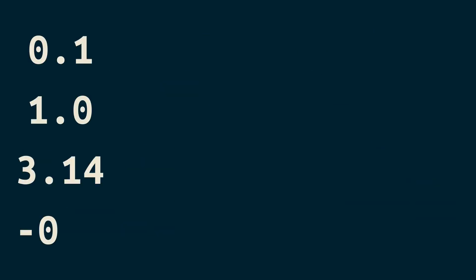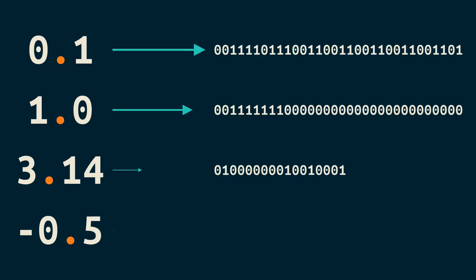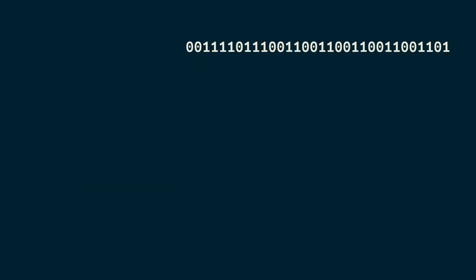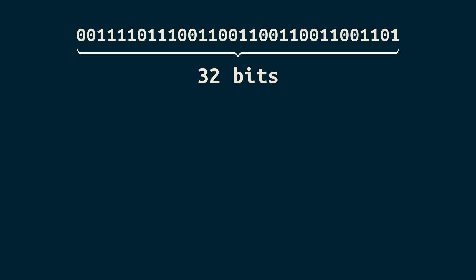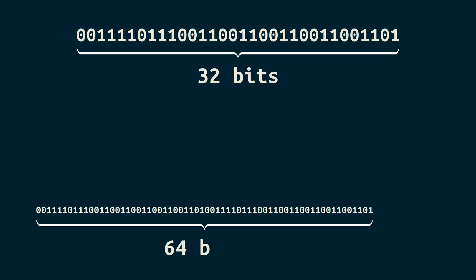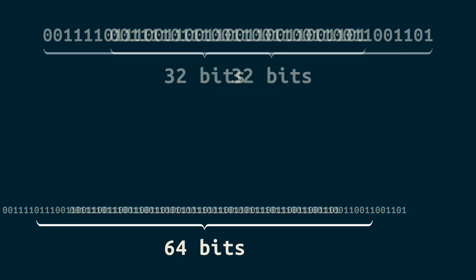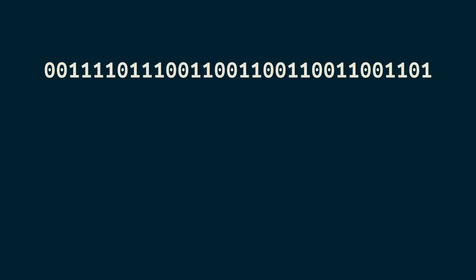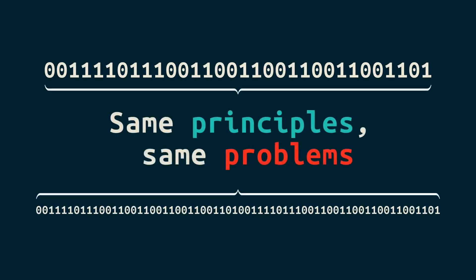When I say floating point number, I mean a number with a decimal point as represented in a computer. The examples in this video use 32-bit binary floating point numbers. 64-bit numbers are usually better, but looking at that many bits makes me feel cross-eyed, so we'll go with 32 bits here. But the principles still apply to 64-bit floating point numbers.